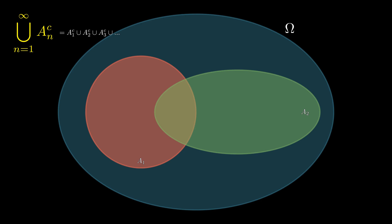And this union is the union of A1 complement with A2 complement, and so on and so forth. But we only have two sets, so we're just going to look at the union between A1 complement and A2 complement.